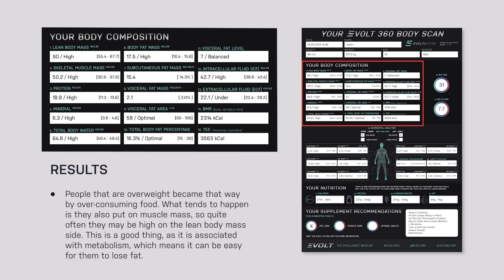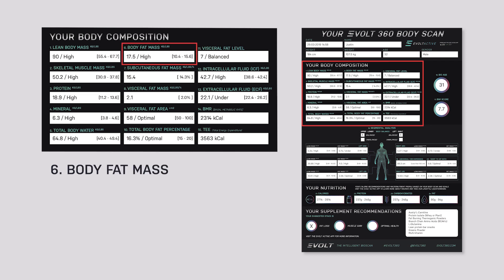What we normally explain to people — especially those who may be overweight — is that they got overweight by over-consuming food and being in a surplus. What tends to happen is they also put on muscle mass, so they will quite often show as high on the lean body mass side. That's actually a good thing, because it's associated with a higher metabolism and therefore makes it easier for them to lose fat.